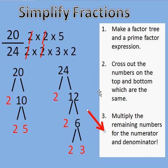Multiply the remaining numbers for the numerator and denominator. So 5 and, well there's only 5 left. So my numerator is going to be 5. And then what do I have left on the bottom? 3 times 2. So that's going to be 6. 5 moves over here.